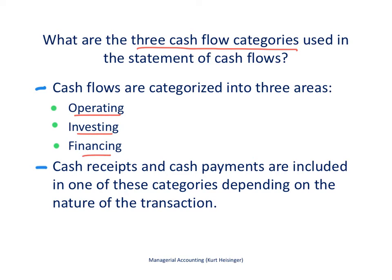We call them activities: operating activities, investing activities, and financing activities. Cash receipts and cash payments that a company has for a period of time are included in one of these categories. The statement of cash flows presents that cash receipts and cash payments information in each of these three categories, depending on the nature of the transaction — whether it relates to current assets, long-term assets, current liabilities, long-term liabilities, or equity types of transactions.